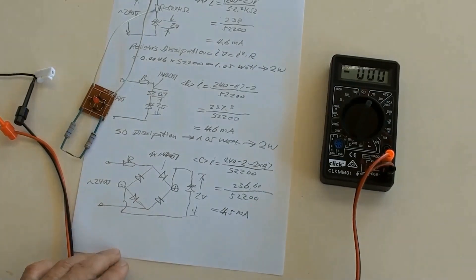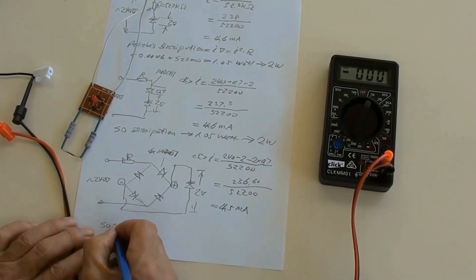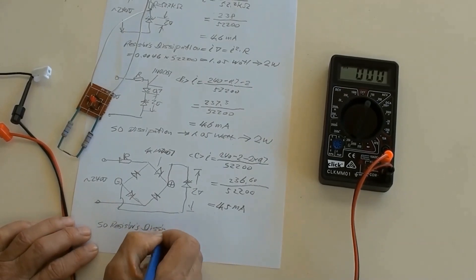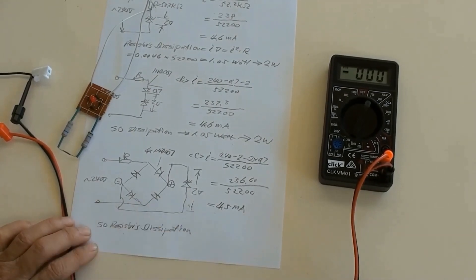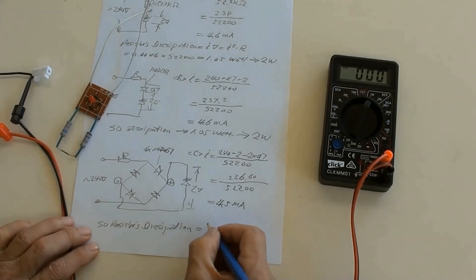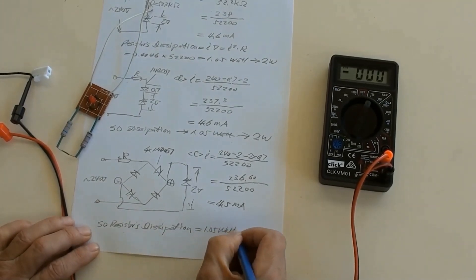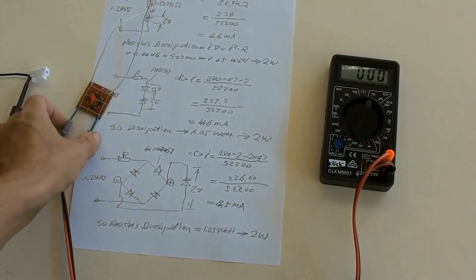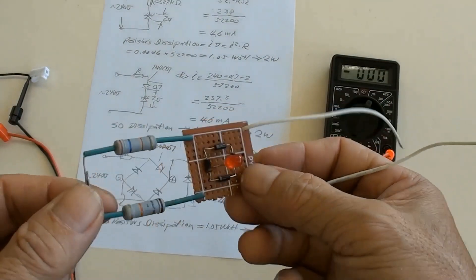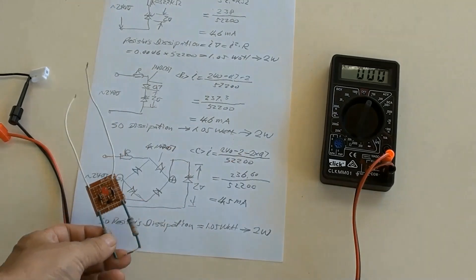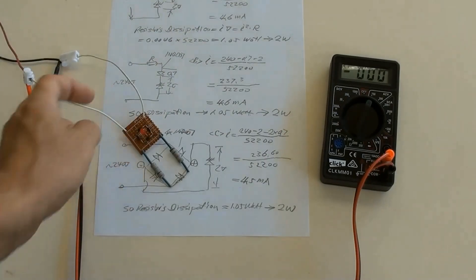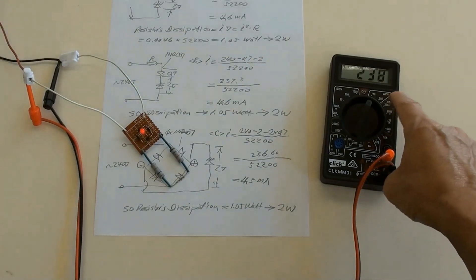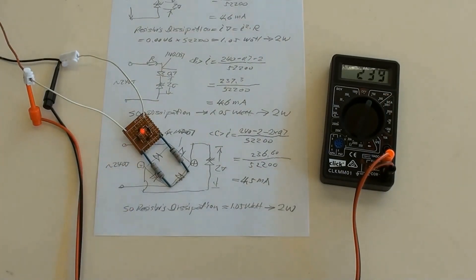This current is almost the same as the previous ones, so the resistor's dissipation equals approximately 1.05 watts, and we choose a 2-watt resistor. The resistor here is combined by two 3-watt resistors. This actual circuit has been connected to the power supply. Switched power on — AC voltage was 239 volts and the LED lit.